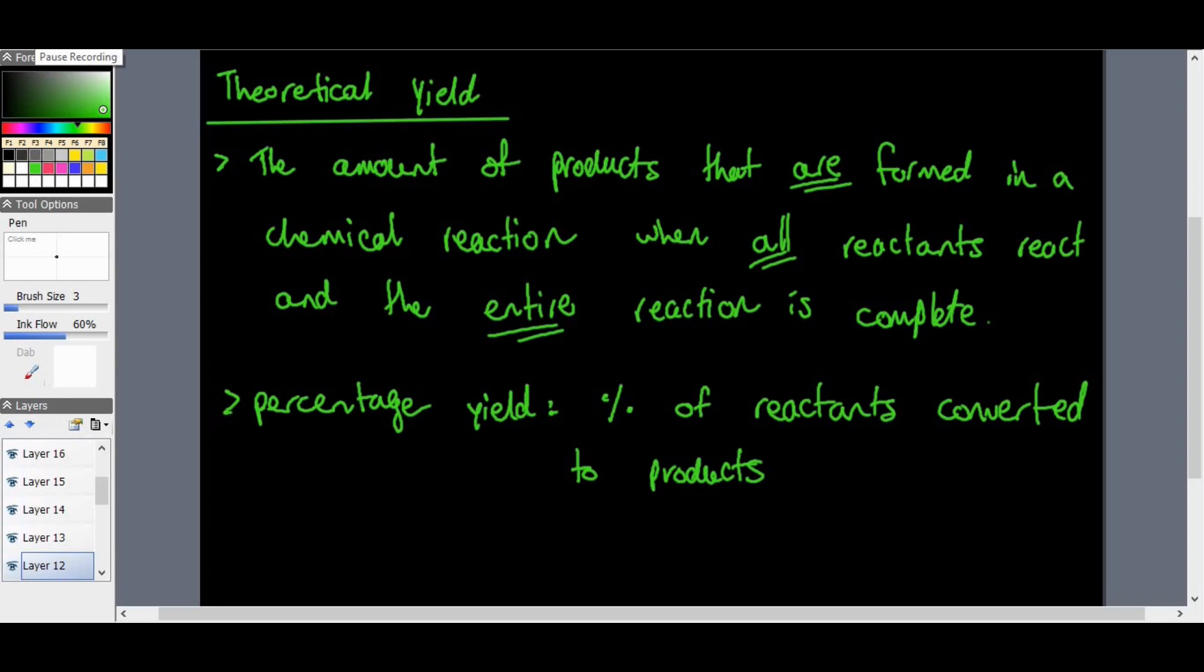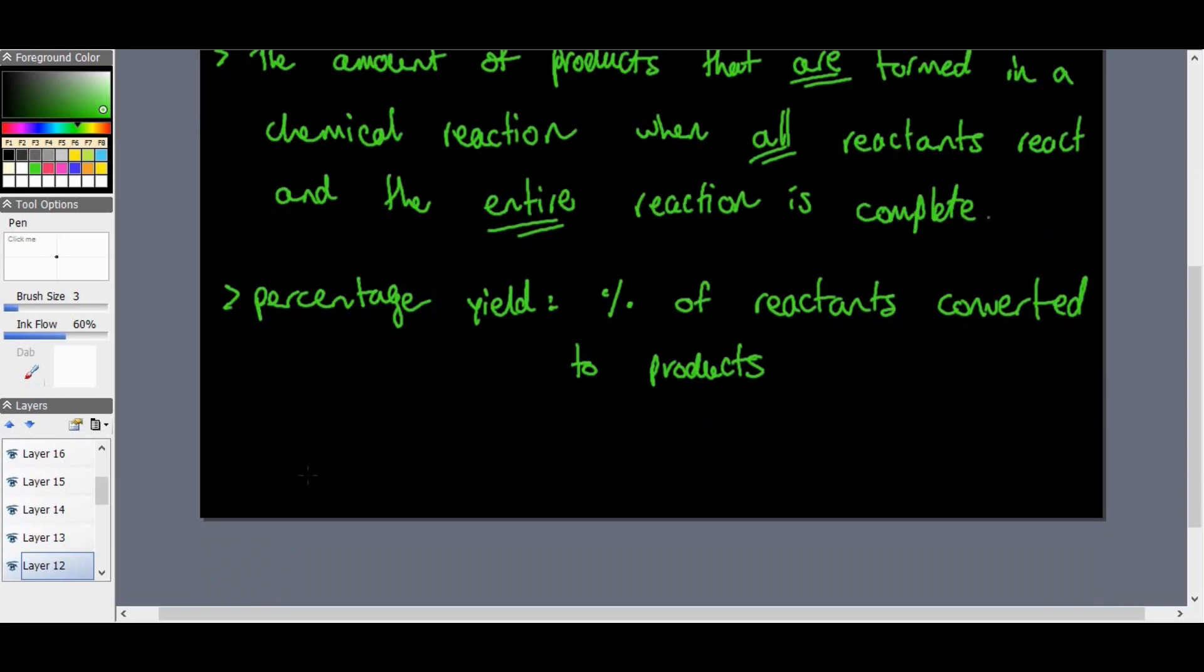To find the percentage yield, we actually measure the amount of product formed after the chemical reaction is complete. And then we compare actual yield to the theoretical yield and determine the percentage. So, we actually formulate a formula that says percentage yield is equal to actual over theoretical times 100 to get it in a percent. So, actual, we actually mean here in grams. So, we take the actual physical masses in grams. Let's have a look at a little worked example.